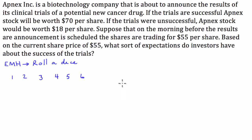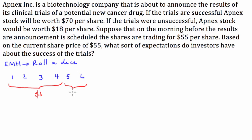Now the reason that this is a game — if we roll the numbers 1 to 4, we get a payoff of $6. If we roll a 5 or a 6, we get a payoff of $30. Basically with this game, what we want to find out is what is the maximum amount we'd be willing to pay for a ticket into this game.